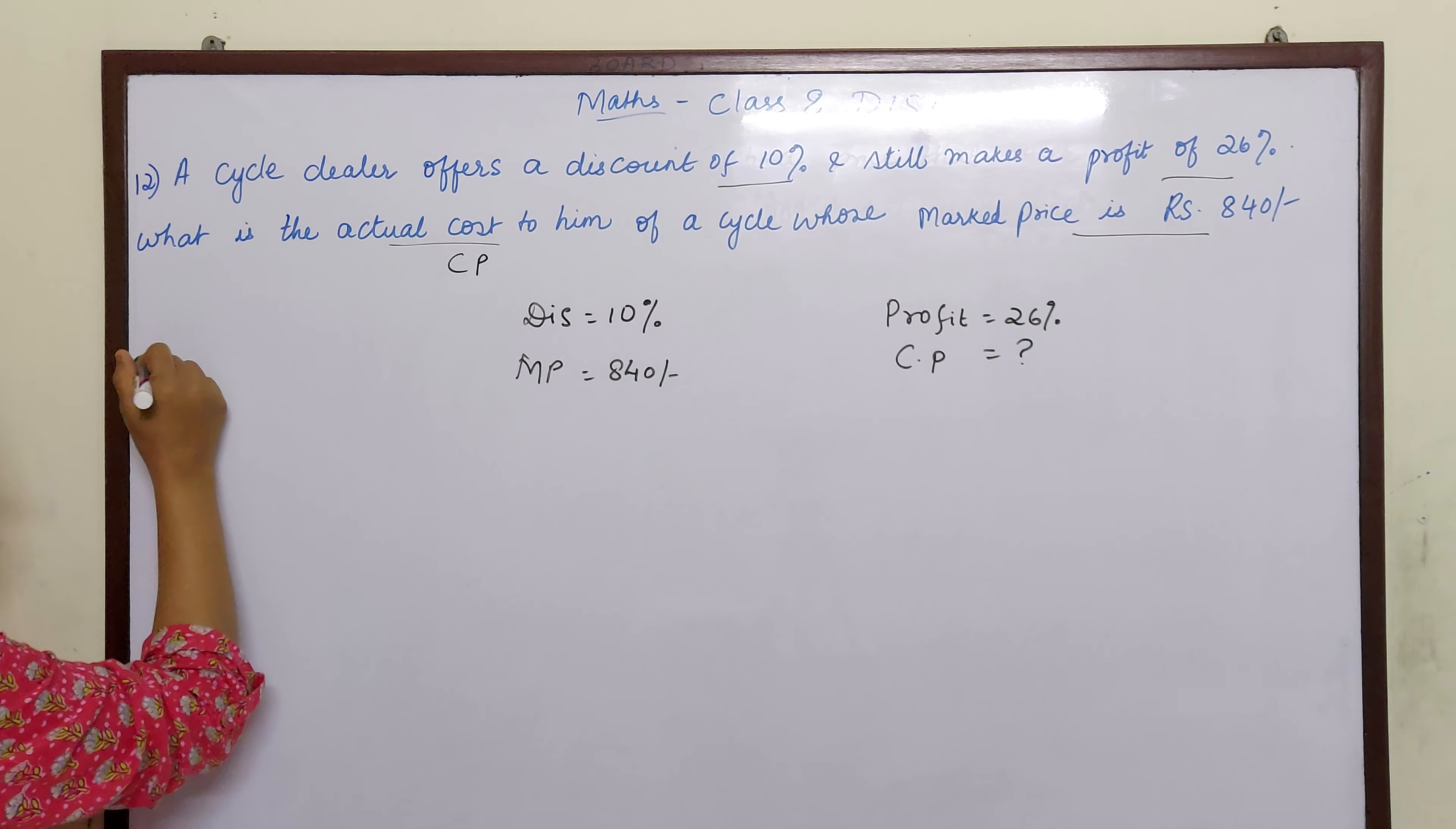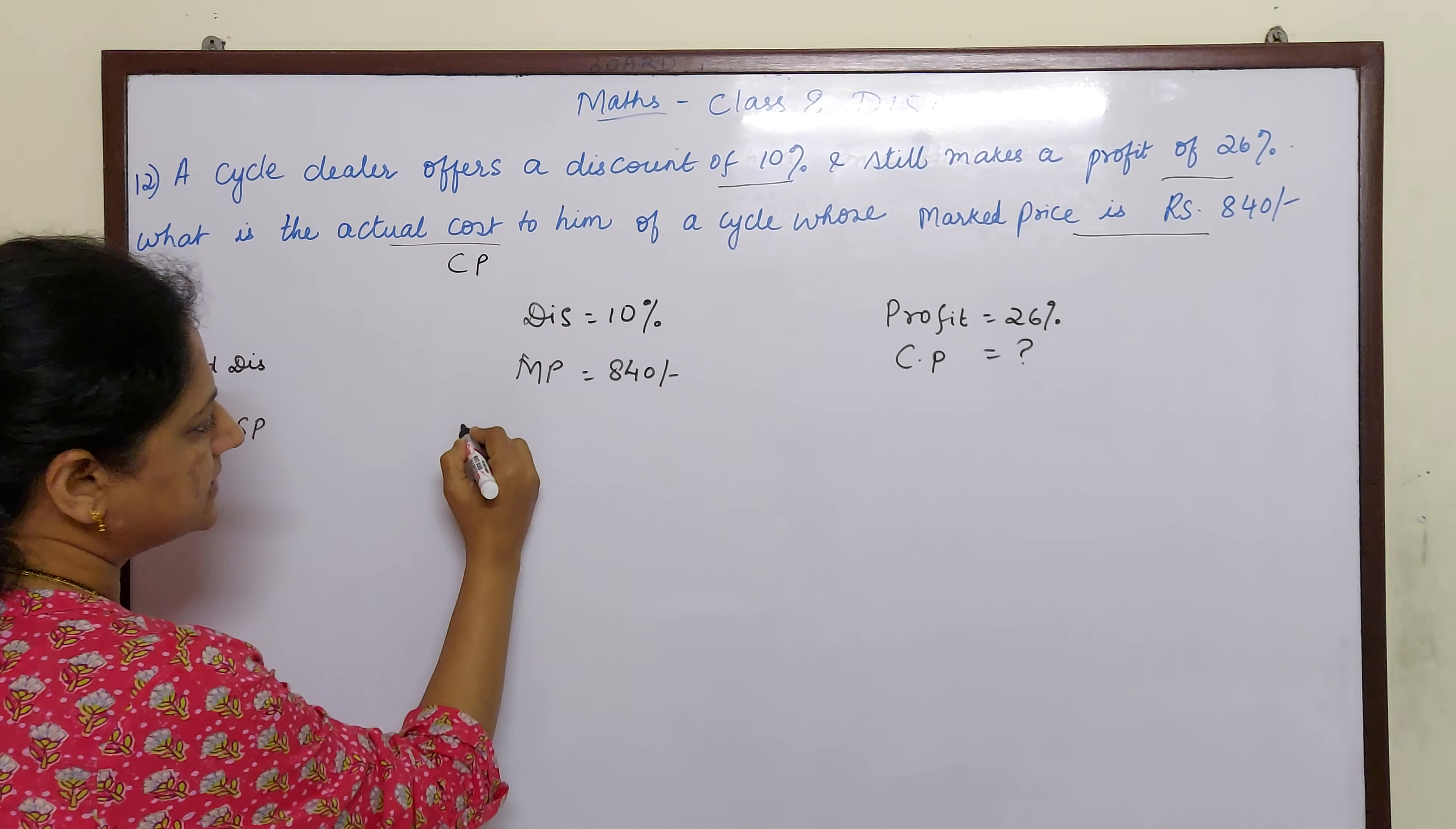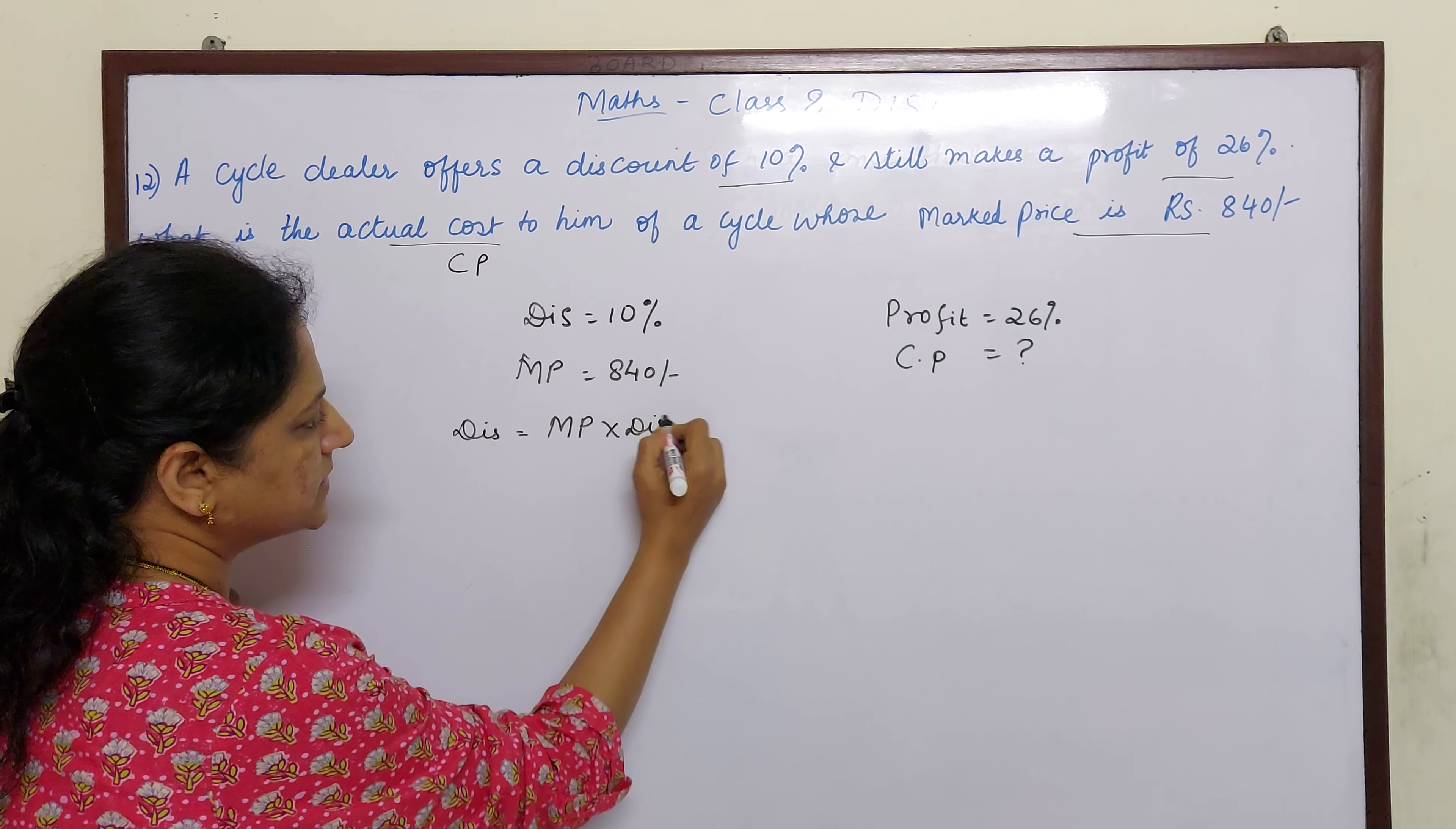What will be our first step? Our first step is find discount. And after that with the help of formula we will find selling price. So let us start: discount is equal to marked price into discount percentage.